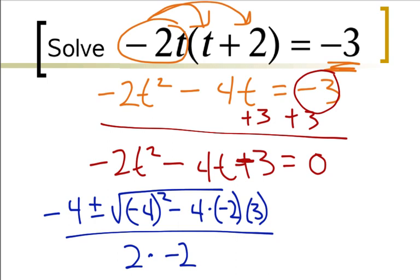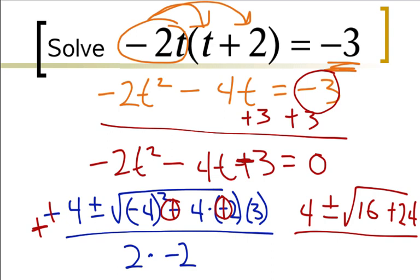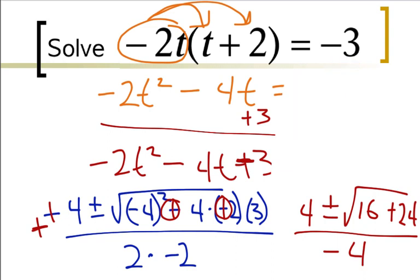Now we can simplify from there. The first one should have been negative, so positive 4 plus or minus the square root of 16 minus negative 24. The signs multiply and change to positive, so we get positive 24 all over negative 4. You add your 16 and 24 and get 40, so we get 4 plus or minus square root of 40 over negative 4.